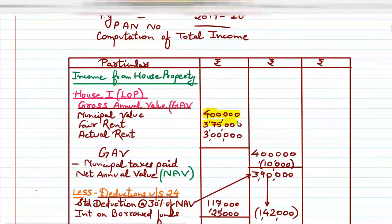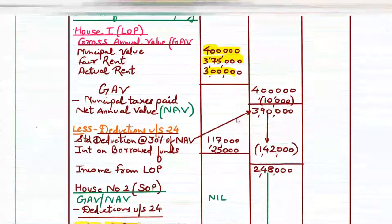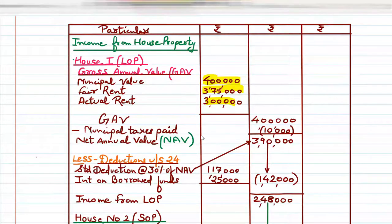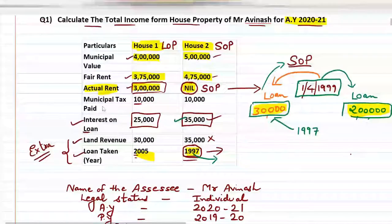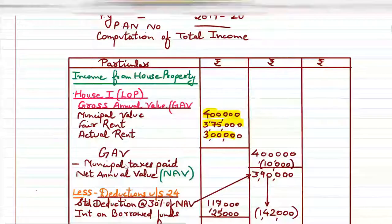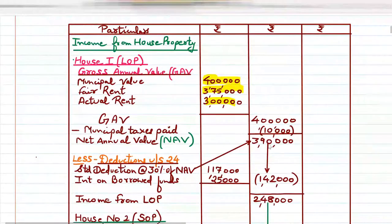The higher value is ₹4,00,000 — that is the GAV, which stands for gross annual value. Next, we deduct municipal taxes paid. From the question, municipal taxes paid is ₹10,000. So ₹4,00,000 minus ₹10,000 gives us ₹3,90,000, and that is your net annual value, which is called NAV.